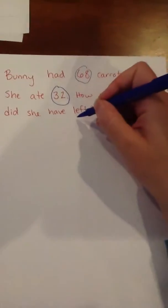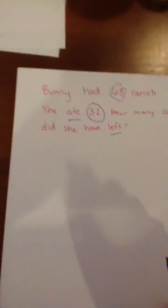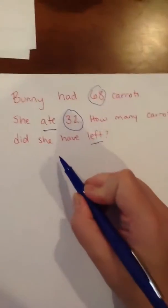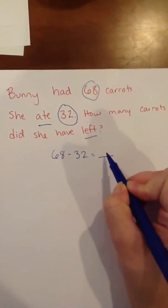Always circle the numbers. How do you know it's subtraction? Because of the keyword left and ate. So you're taking away. Okay, let's write our equation. 68 minus 32 equals C.